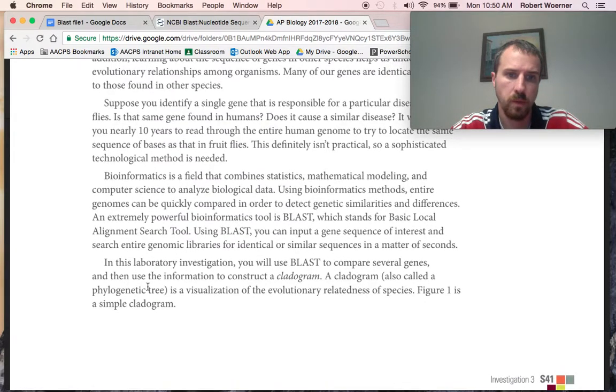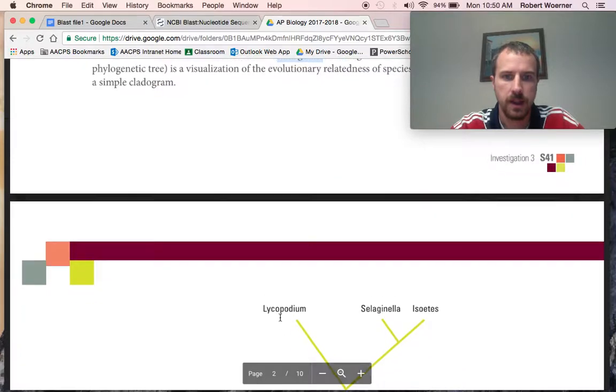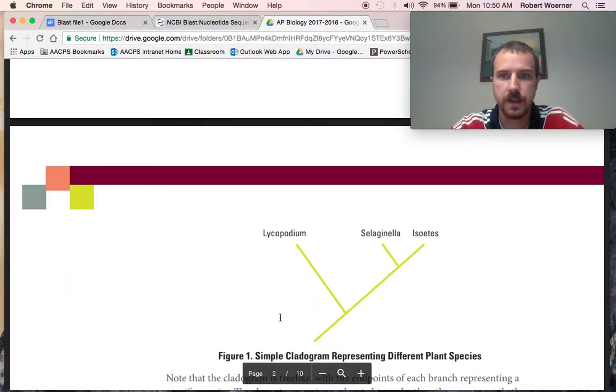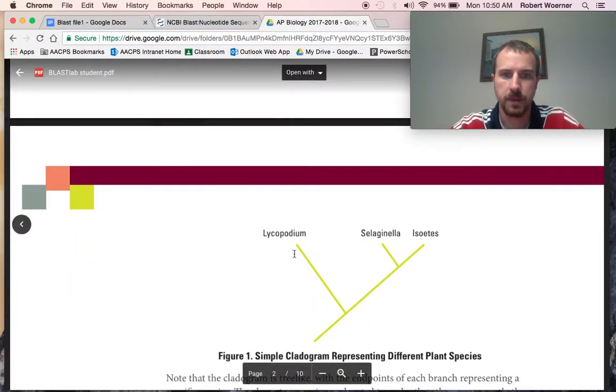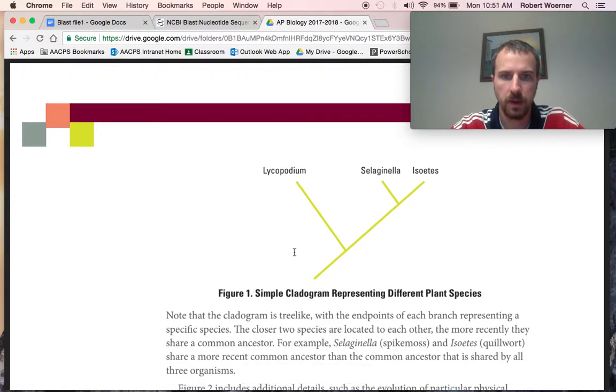So we're going to use this thing called a cladogram. A cladogram is a phylogenetic tree. It's basically saying this came first, then this, then this. Here's a very simple cladogram of plant species. We have the lycopodium, the selaginella, and then the isoetes.